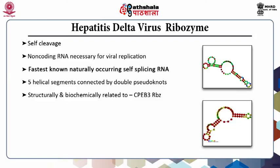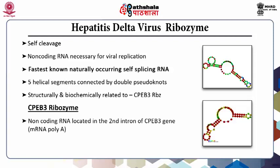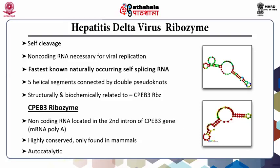The HDV ribozyme is very similar to another group known as the mammalian CPEB3 ribozyme. A genome-wide search for ribozymes revealed an HDV-like RNA homology in the human CPEB gene, known as the mammalian CPEB3 ribozyme, and in humans this homology region has been associated with mRNA polyadenylation. This catalytic RNA is highly conserved and found only among mammals, while other HDV ribozymes have been identified to be active in vitro in other eukaryotes.